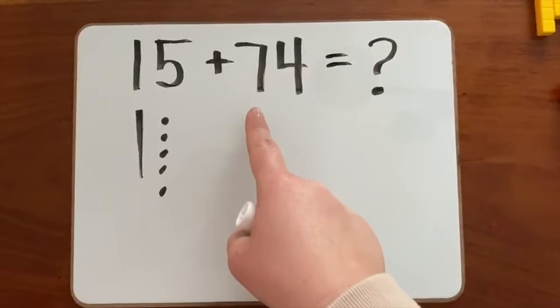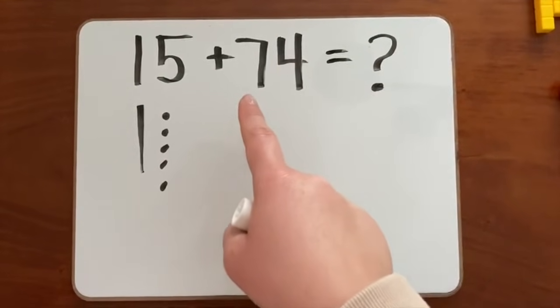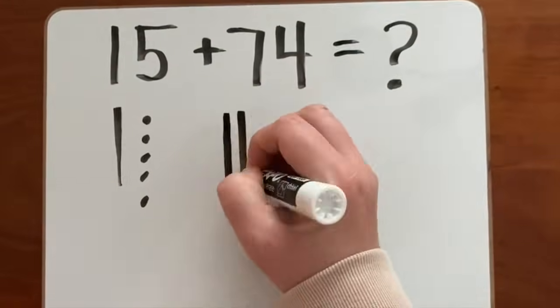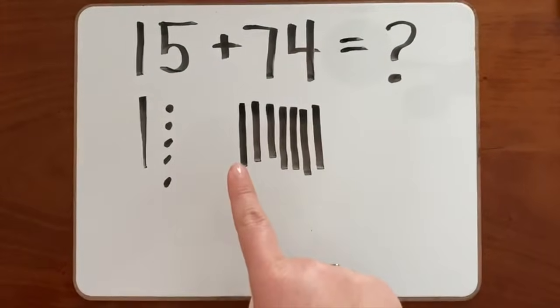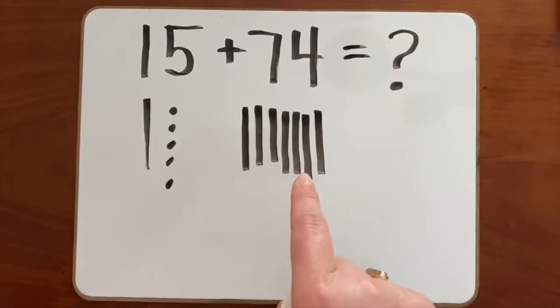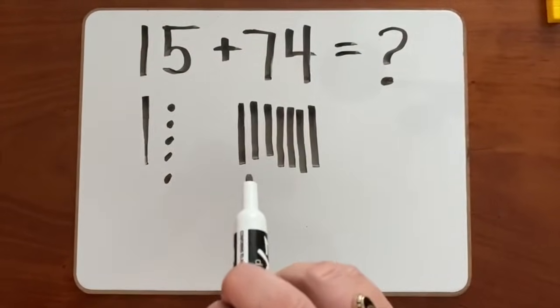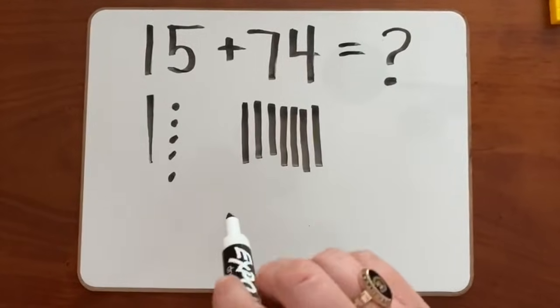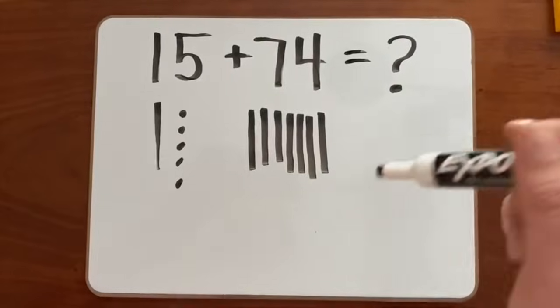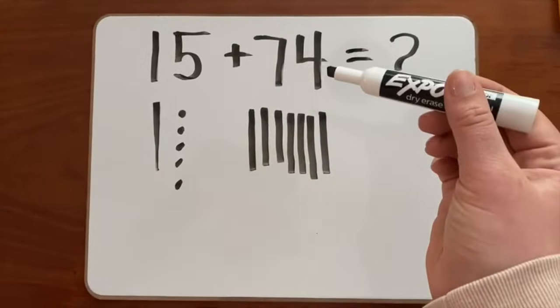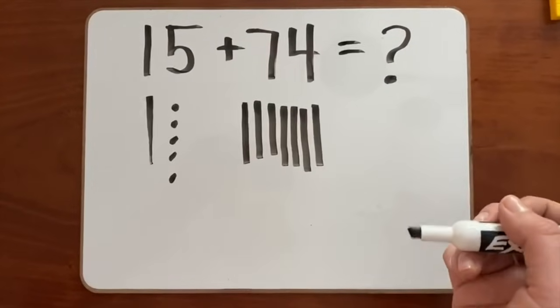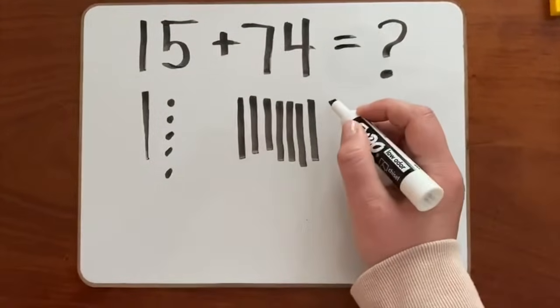There's a seven in the tens place, so we need seven longs or seven straight lines. 1, 2, 3, 4, 5, 6, 7. We drew seven straight lines to represent the seven longs there would be for the number 74. There would be four cubes in the number 74. So we need four dots to represent our four cubes.